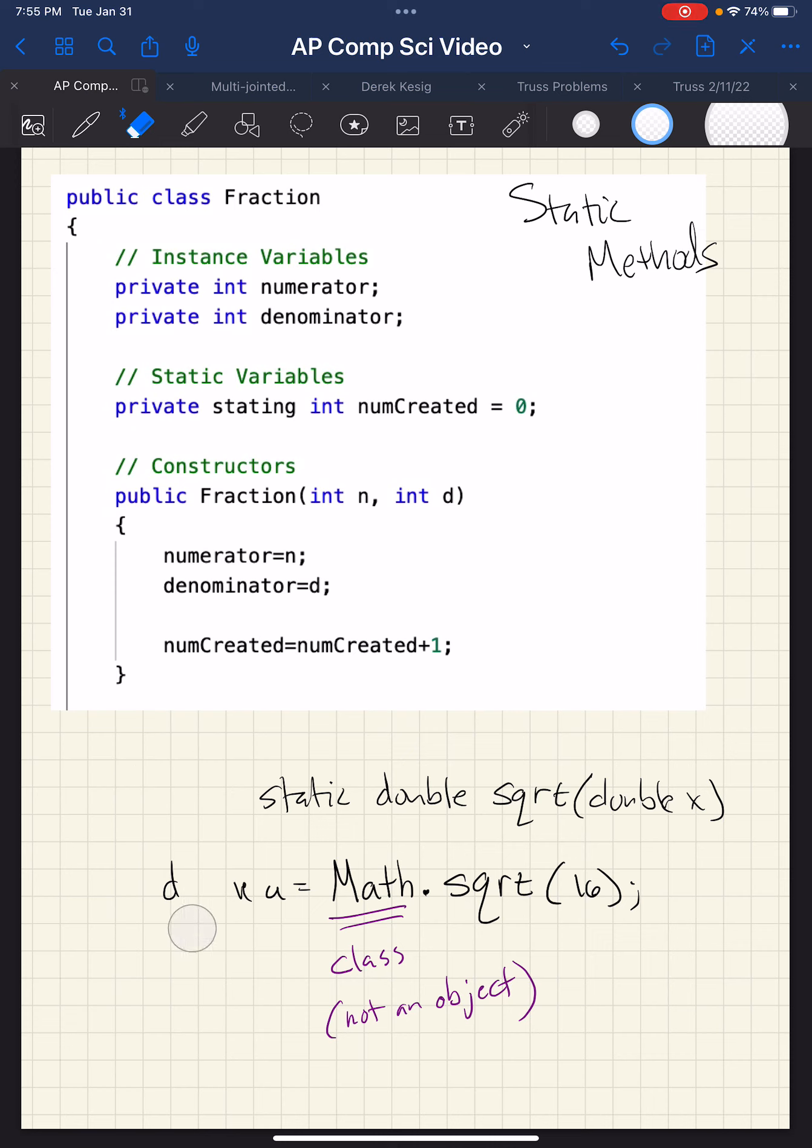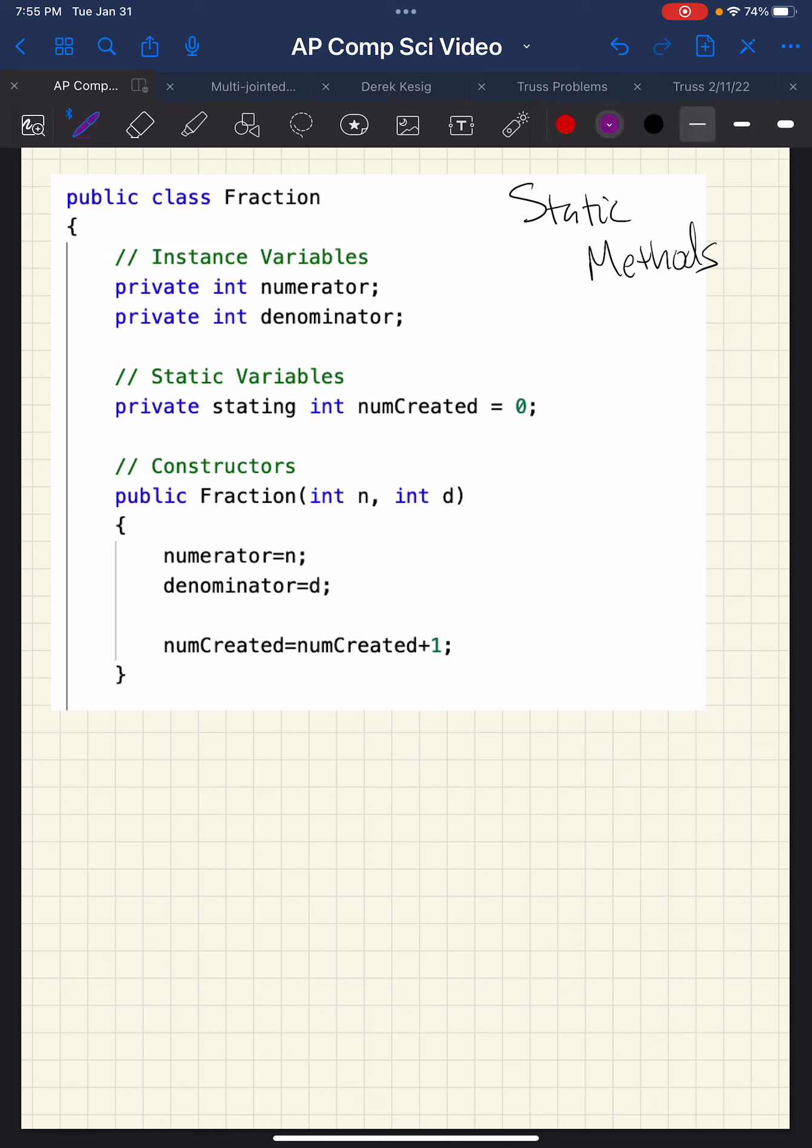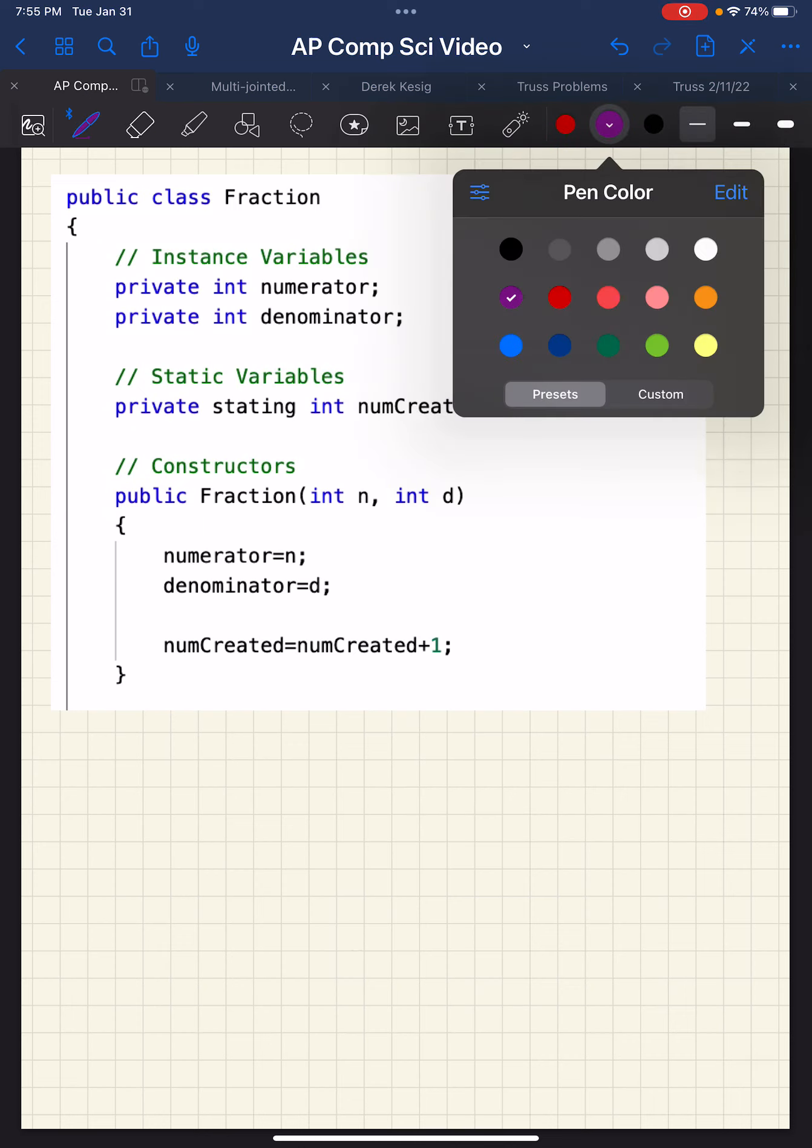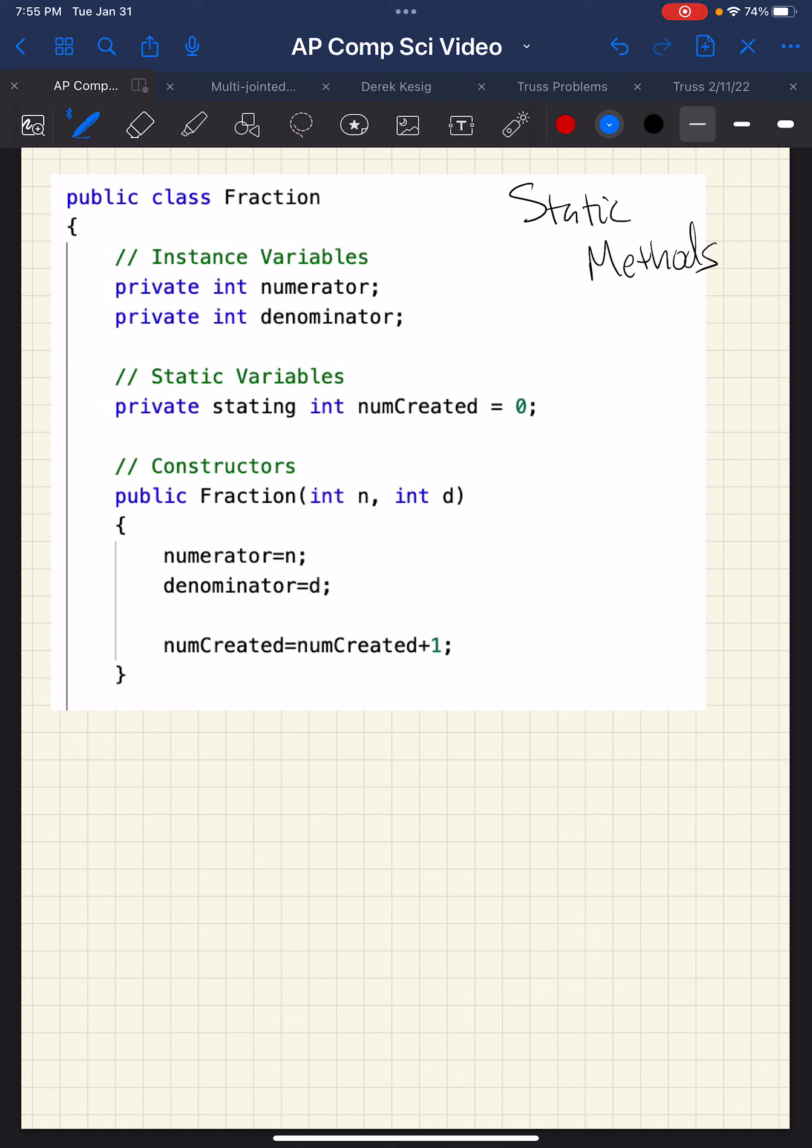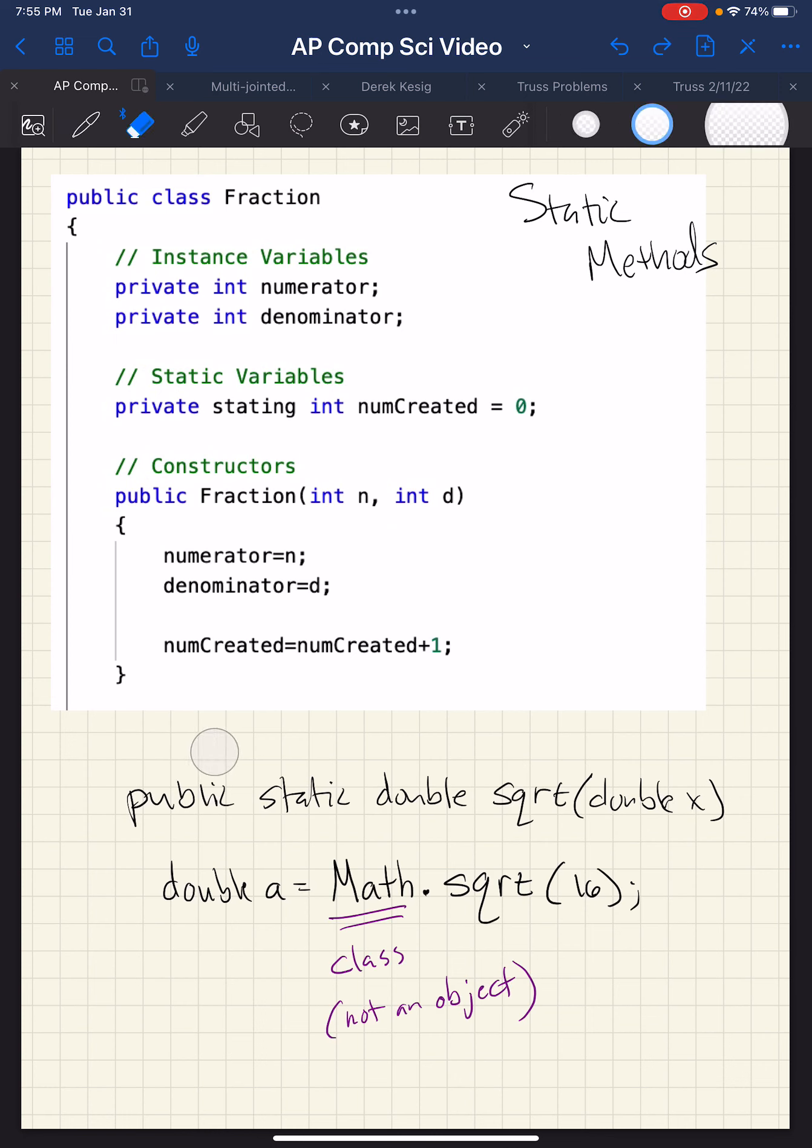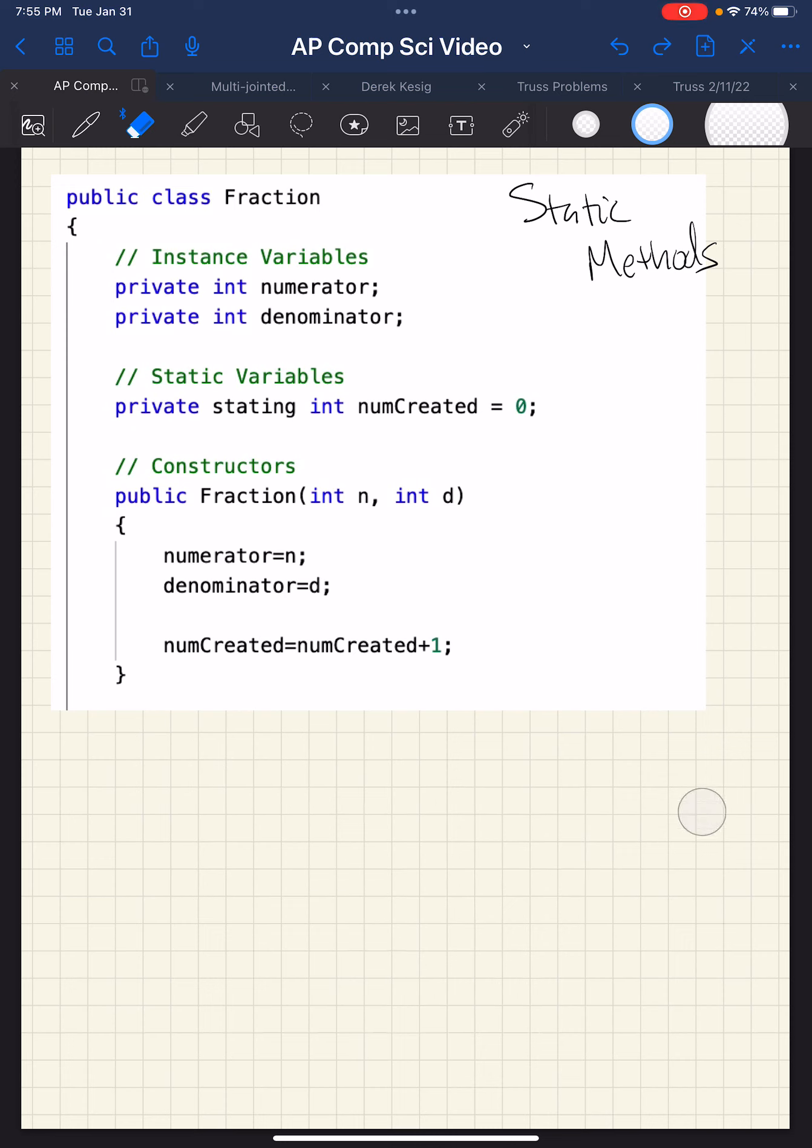So that's pretty obvious in a class like math. Let's look at this class up here we have. We have fraction. We have the class fraction, and that class has some instance variables here. Every fraction has a numerator and denominator.